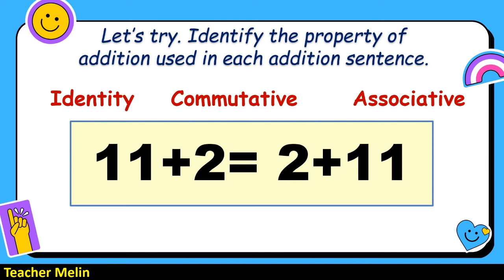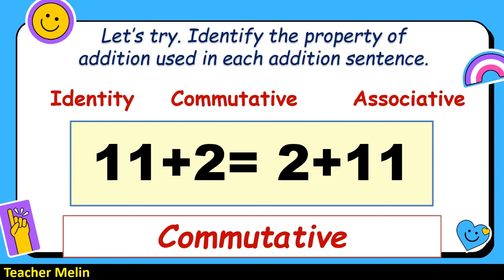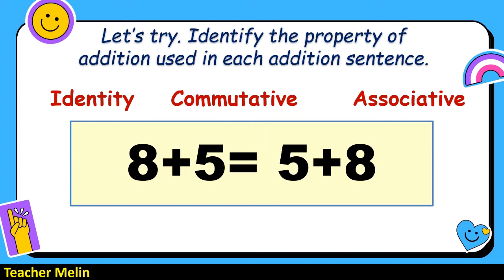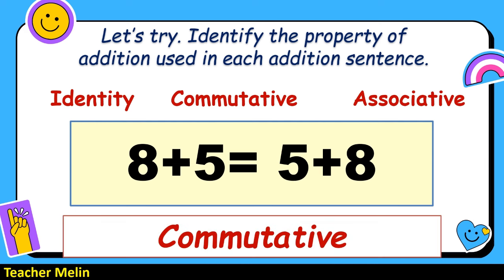How about 11 plus 2 equals 2 plus 11? The correct property is commutative — this is a commutative property of addition. How about 8 plus 5 equals 5 plus 8? The correct answer is also commutative — this is a commutative property of addition.